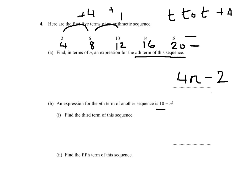Another sequence with the nth term expression is 10 minus n squared and we need to find the third term of the sequence. What we need to do is substitute n by the numerical value of 3, so you get 10 minus 3 power 2, which is 10 take away 9 and that gives us 1.